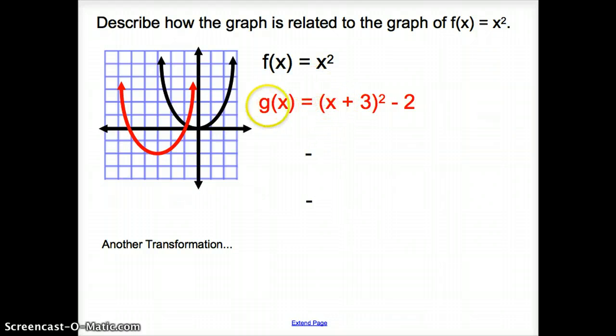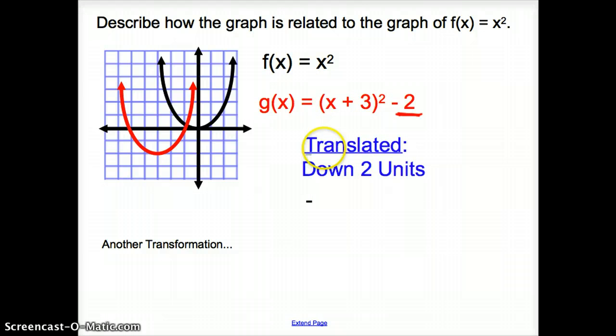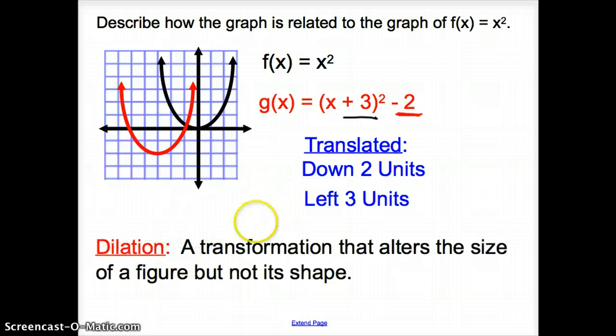Now, what if it is something like this? Again, we're describing the graph here. First thing to note is, what does the minus 2 do to the graph? The minus 2 outside the parentheses will move it down. So it's translated down 2 units. Then, what will the plus 3 do to my graph? The graph then will move it to the left 3 units.